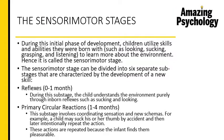Piaget's theory has four stages, and the first is the sensorimotor stage — named so because it involves the different senses of the child. During this phase, children utilize the skills they were born with to learn about their environment, specifically their basic senses: to look, suck, grasp, and listen. This sensorimotor stage can be divided into six sub-stages.